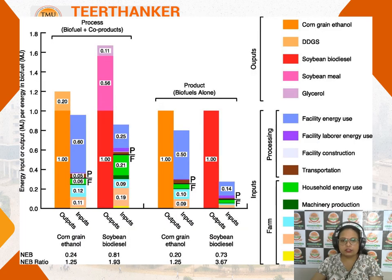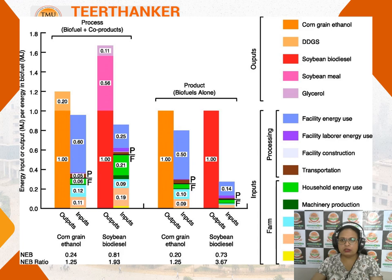This graph shows that when corn is used for ethanol production and biodiesel production, what are the energy inputs and outputs — how much input energy is required for extracting biofuel from plant material. It is a comparative account showing different bio-products alongside diesel with different colors.